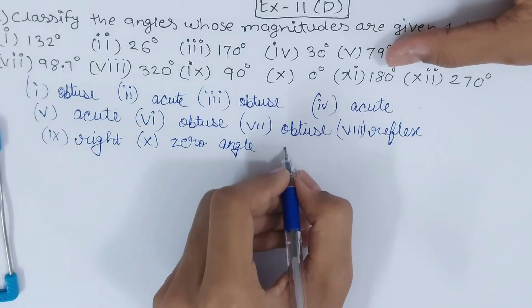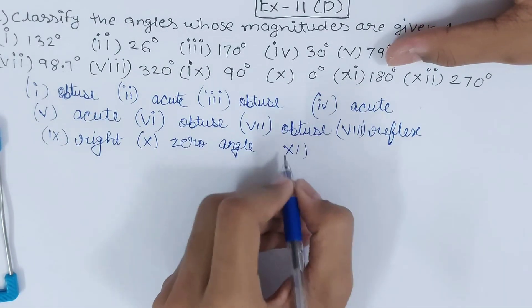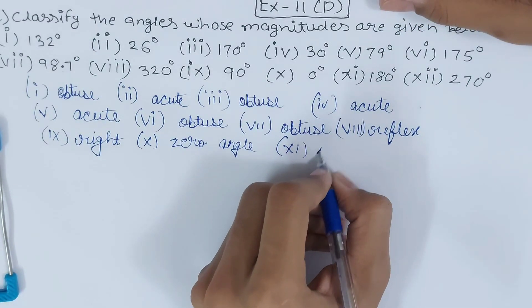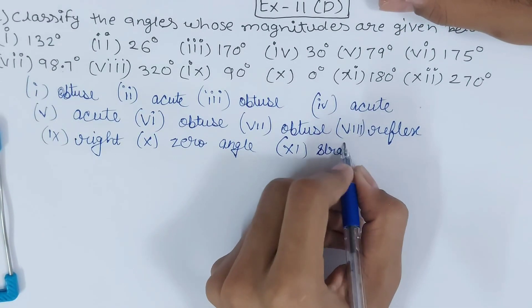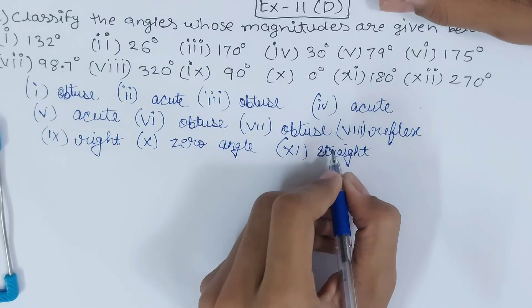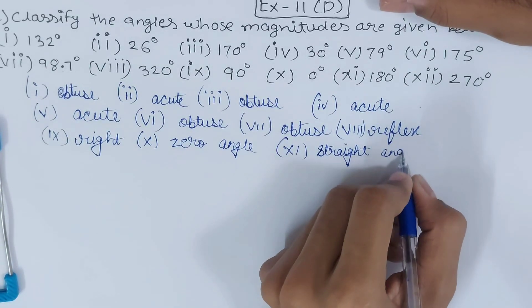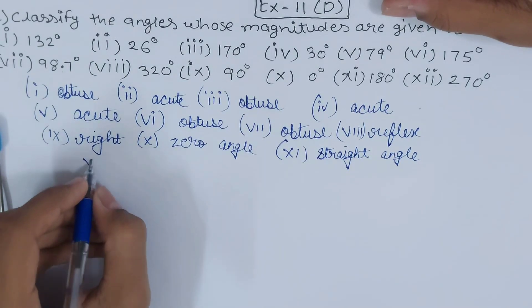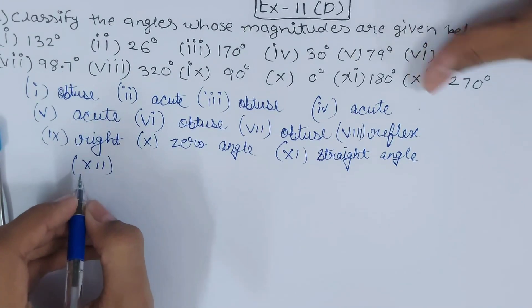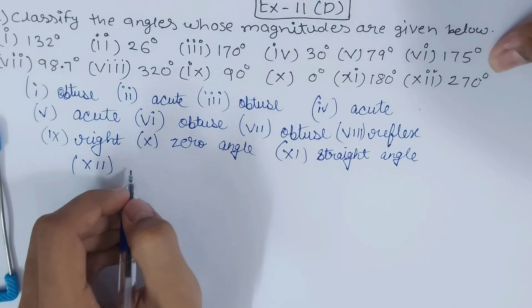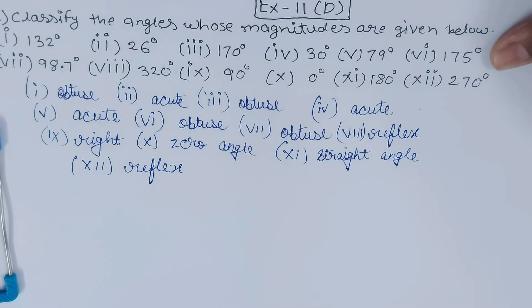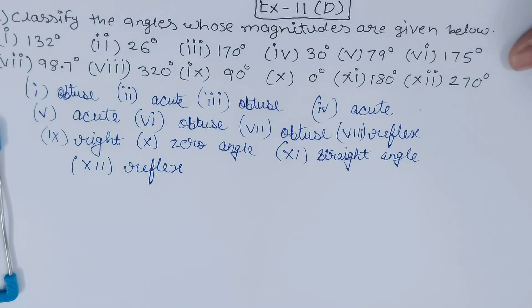Then part 11 is 180 degrees, that is straight angle. Then part 12 is 270 degrees. 270 degrees is more than 180, less than 360, so it's a reflex angle confirmed. And with that all parts are over.